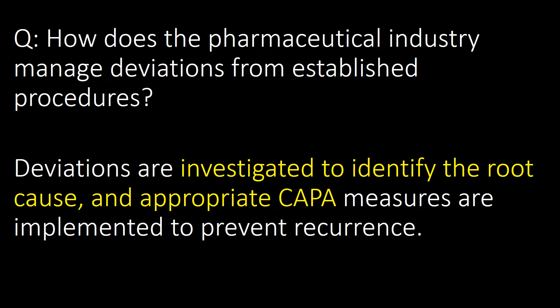How does the pharmaceutical industry manage deviations from established procedures? Deviations are investigated to identify the root cause, and appropriate CAPA (corrective and preventive action) measures are implemented to prevent recurrence.